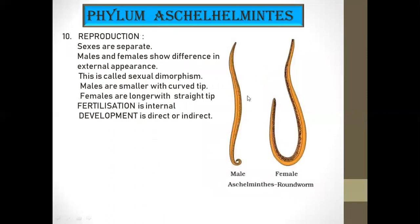Regarding reproduction: sexual reproduction is present and the sexes are separate. From this phylum onwards, sexes are separate — they show external differences. In the male, the posterior end is curved, while in the female the posterior end is somewhat straight. Comparing size, the females are larger and stouter, while the male is smaller.